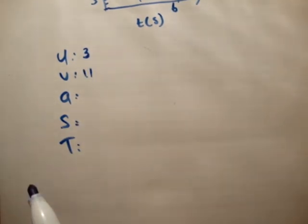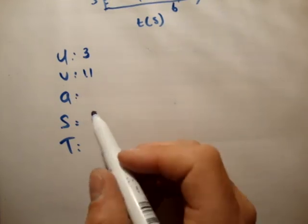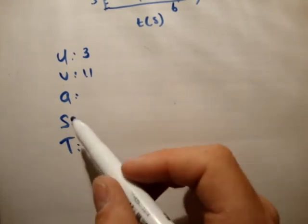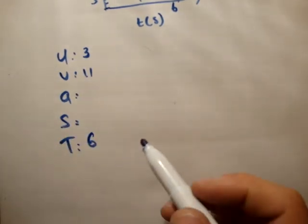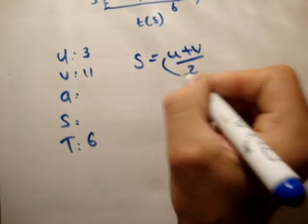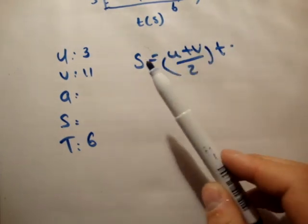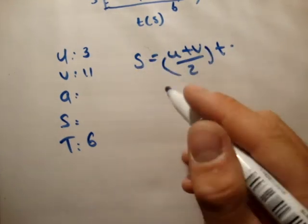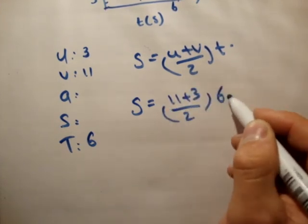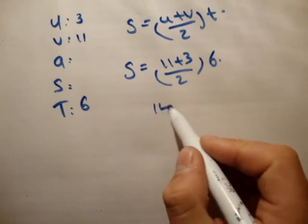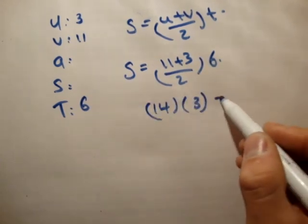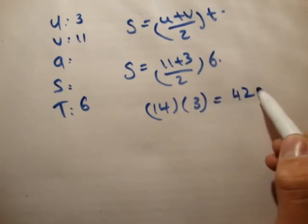The acceleration is unknown, the distance is unknown, and the time is 6. So we're trying to get this distance, S equals U plus V over 2 times T. Will that work? The answer is it will, because we know all of the variables except for S, which we're trying to find. So S equals 11 plus 3 over 2 times 6. So that's equal to 14 times 3 is equal to 42 meters.